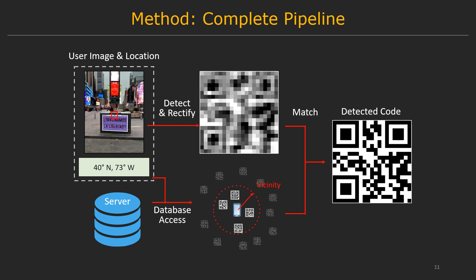Now let's take a look at the whole pipeline. After we capture an image, we detect where the code is and rectify it to a square shape. The GPS location of the user is sent to a server, which returns a list of all codes in the vicinity. The rectified code is then matched against this list of candidate codes.